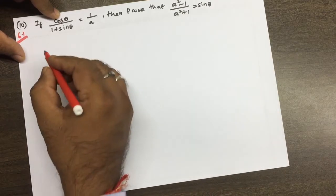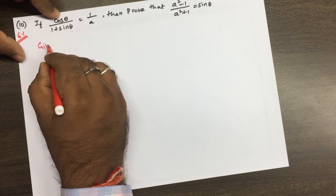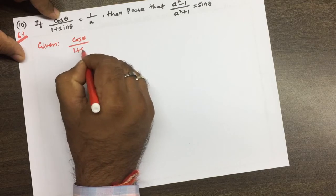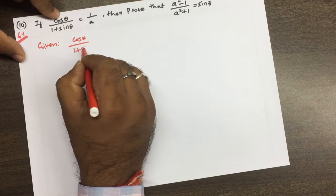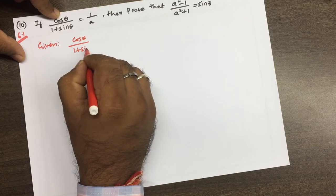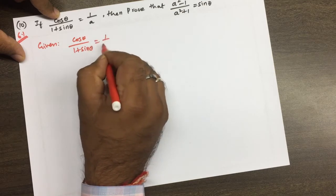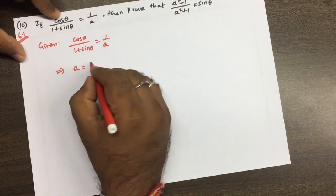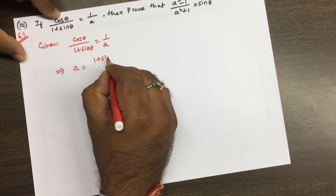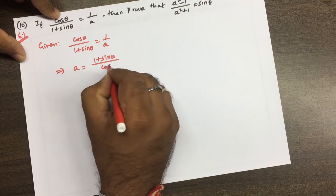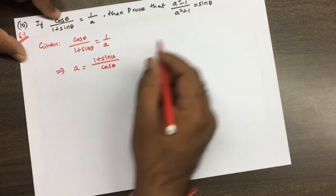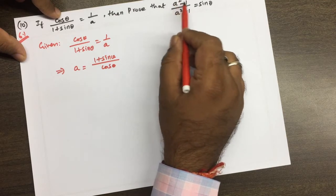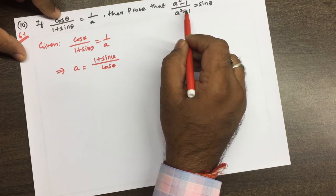Here, we have to use what is given, that is cos θ / (1 + sin θ) = 1/a. So from this, a = (1 + sin θ) / cos θ. And first of all, we have to find (a² - 1) / (a² + 1).